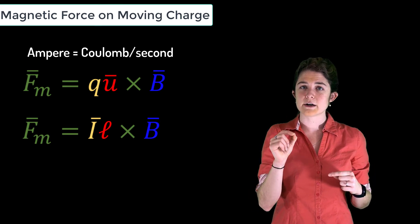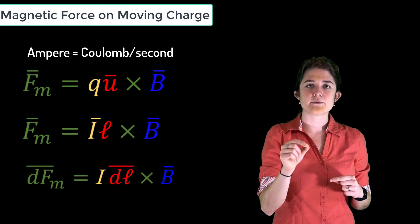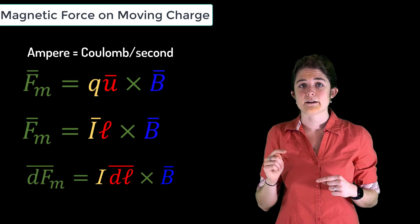on a differential current element in the presence of a magnetic field as dF equals I dℓ cross B.